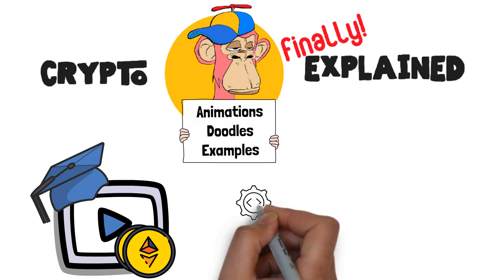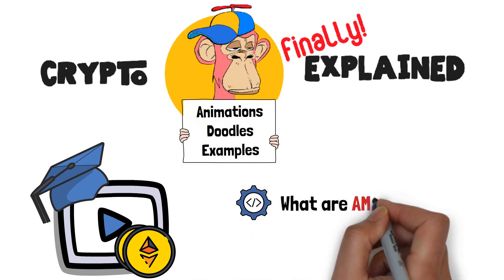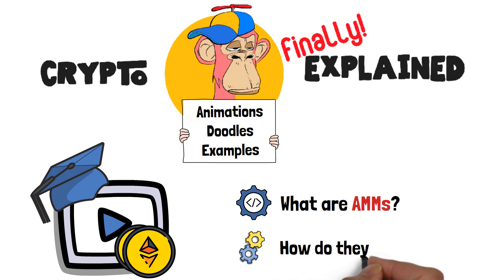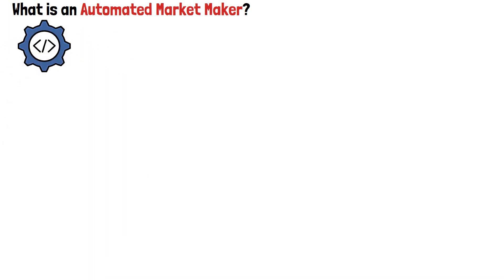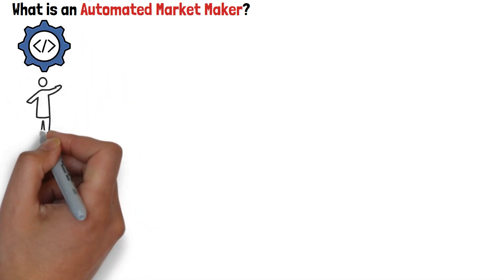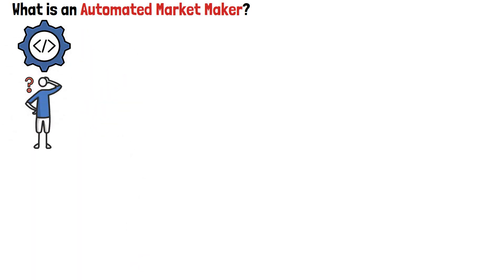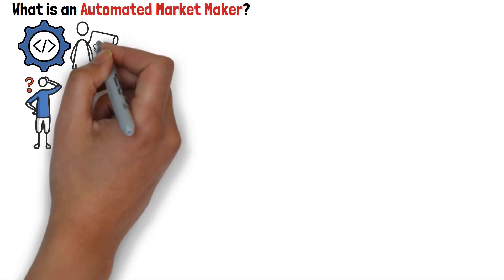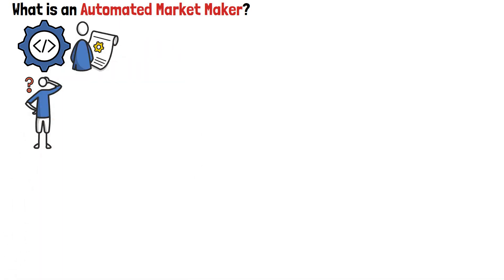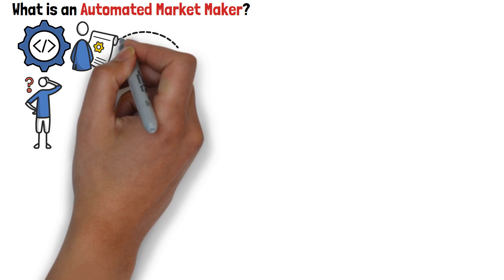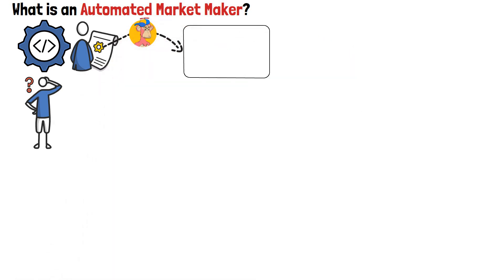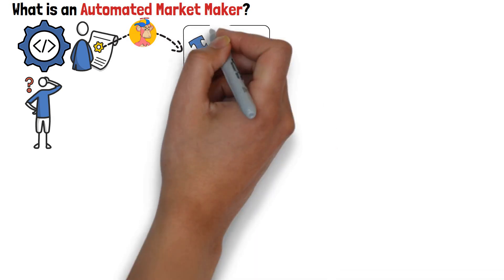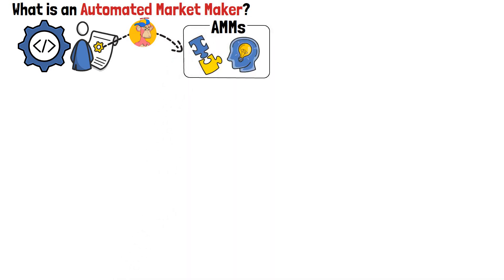In this video, I will visually explain what an automated market maker is, and how automated market makers work. Automated market making is one of the more difficult topics of the cryptocurrency world, mostly due to all of the technicalities surrounding it, as well as the fact that it's covered with industry-specific jargon. On this channel, we make a point to display and explain such topics in a simple and approachable manner — AMMs are no different.